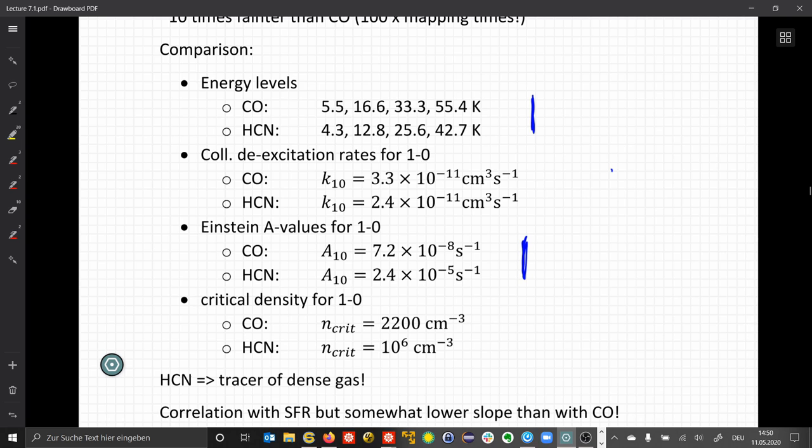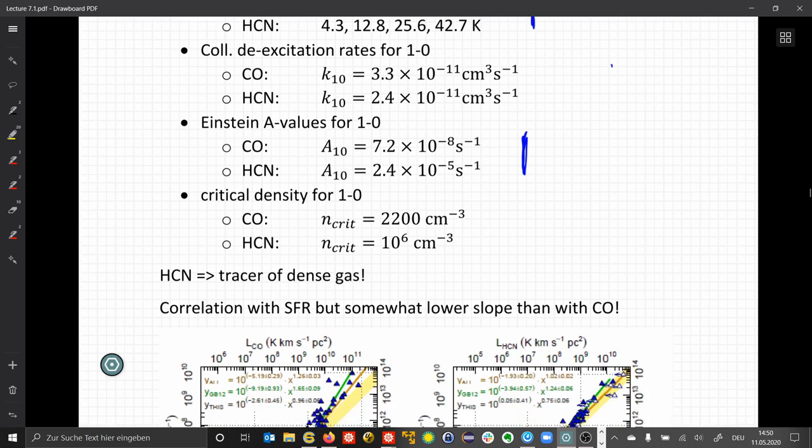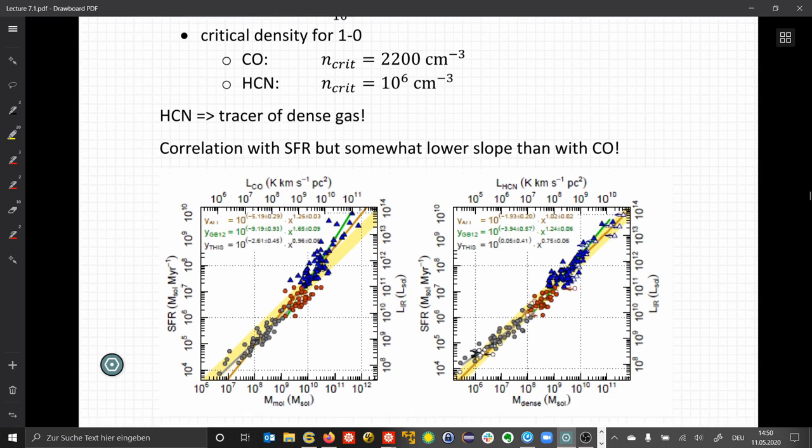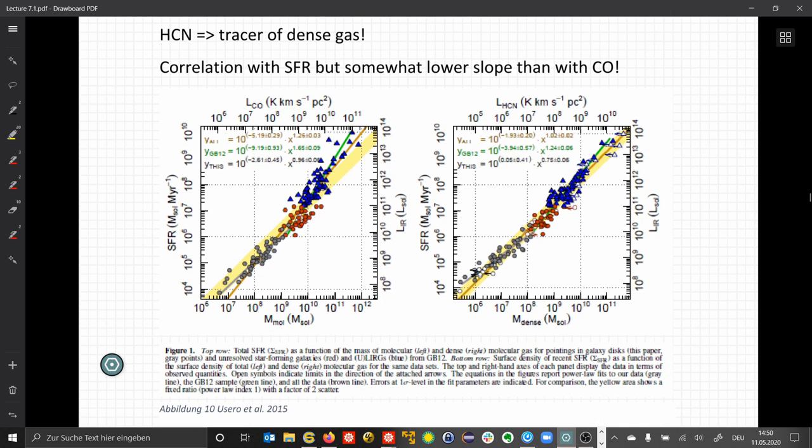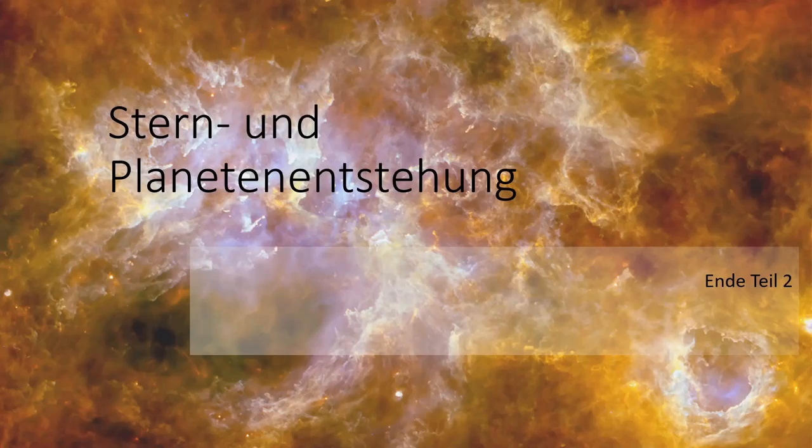Otherwise, it will be too faint. Using this tracer, we can plot the same correlation with star formation rate, and we find a tight correlation with a somewhat lower slope compared to the one we find when we do the correlation with the CO-derived gas masses.